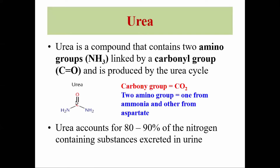The source of the carbonyl group in urea is bicarbonate. One amino group comes from ammonia, which is released during degradation of amino acids. The source of the other amino group is aspartate. Urea accounts for 80 to 90 percent of the nitrogen-containing substances excreted in urine.